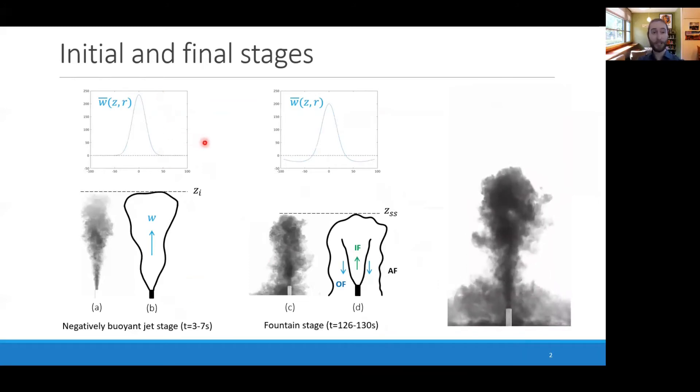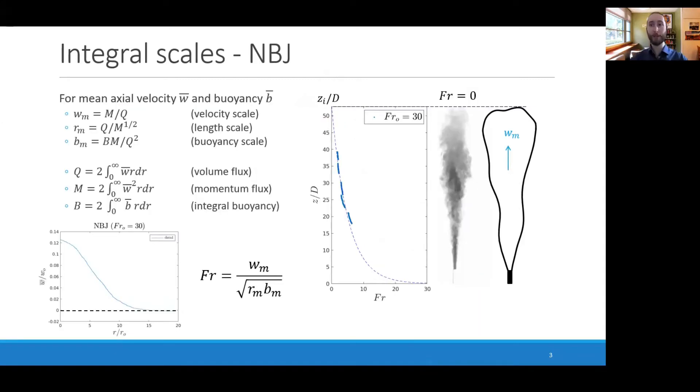This has a velocity profile something like this, where everything is positive, while the fully developed case has a sort of positive inner core and negative velocities on the outside. Because negatively buoyant jets don't have a return flow, we can use some of the same tools that we commonly apply to plumes or buoyant jets.